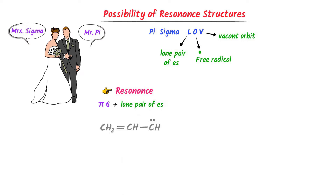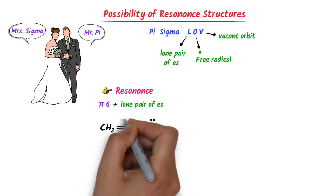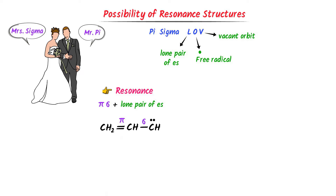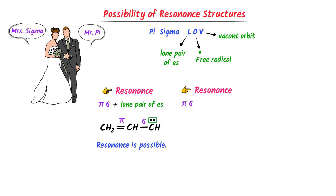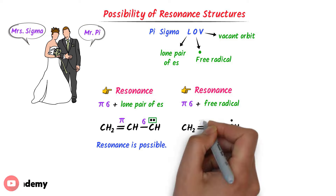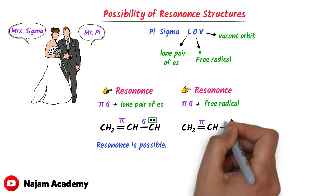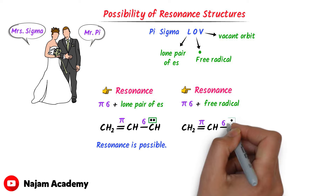For example, consider this molecule. Here, this is a pi bond, sigma bond, and lone pair of electrons — so resonance structures are possible. Secondly, resonance is possible if there is Pi-Sigma plus free radical. For example, consider this molecule. Here, this is a pi bond, this is a sigma bond, and this is a free radical.